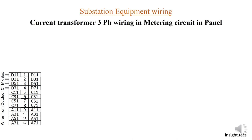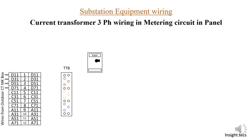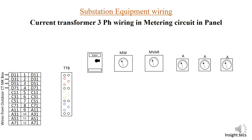First of all, TDB is the test terminal block. Then the kWh meter, which is the measurement of energy. Then the megawatt meter, which shows how many megawatts are passing at a given time. Then the MVR meter, which shows the power factor at a time. And the MVR meter, which is 3-phase.